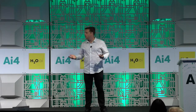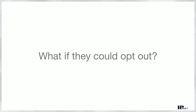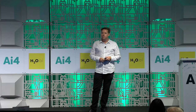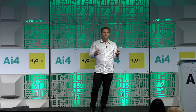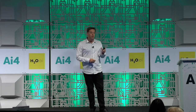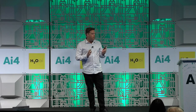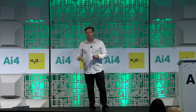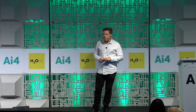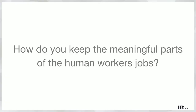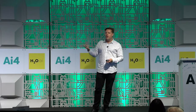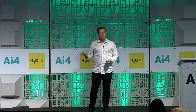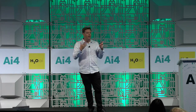My question to everybody: when making decisions to deploy automated systems, what if they could opt out? What if it cost you for them to opt out and walk away from the system, but you still had to help them? That would probably make you rethink how you deploy these systems. And finally, how do we keep the meaningful parts of human work involved? How do we allow for people to be creative? Machines are great at detecting anomalies — they have no idea what to do with them. How do we still allow for that?